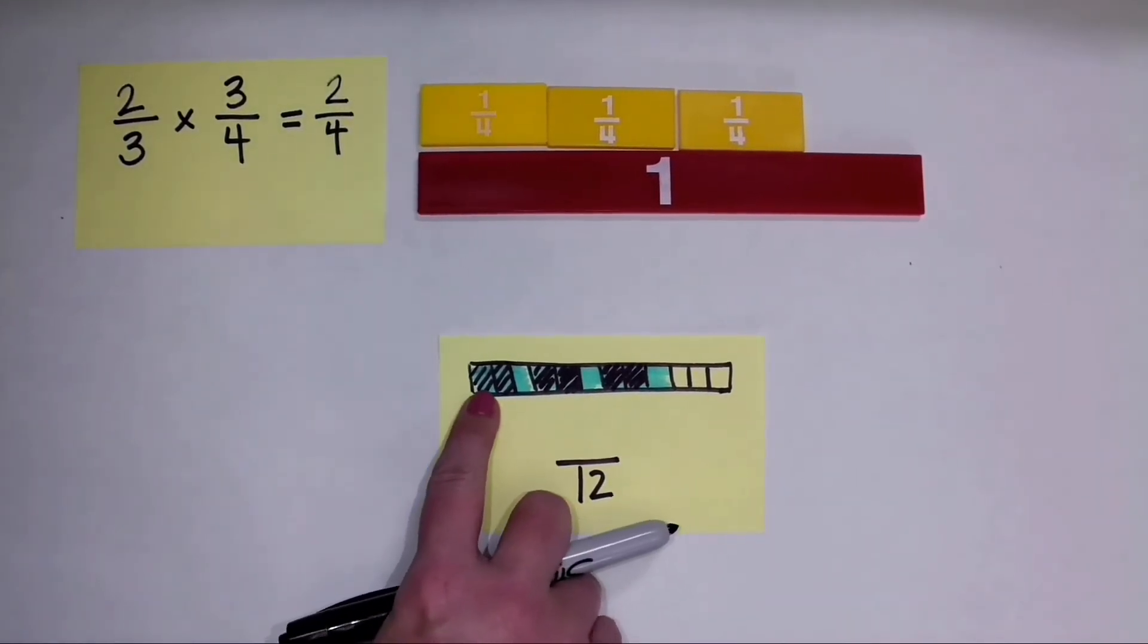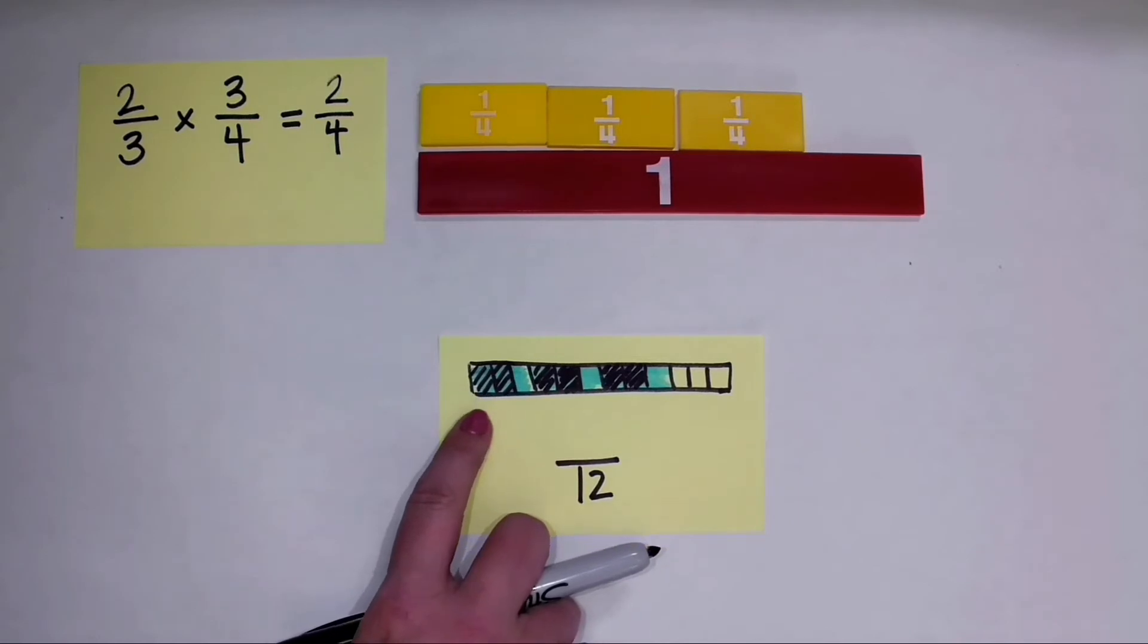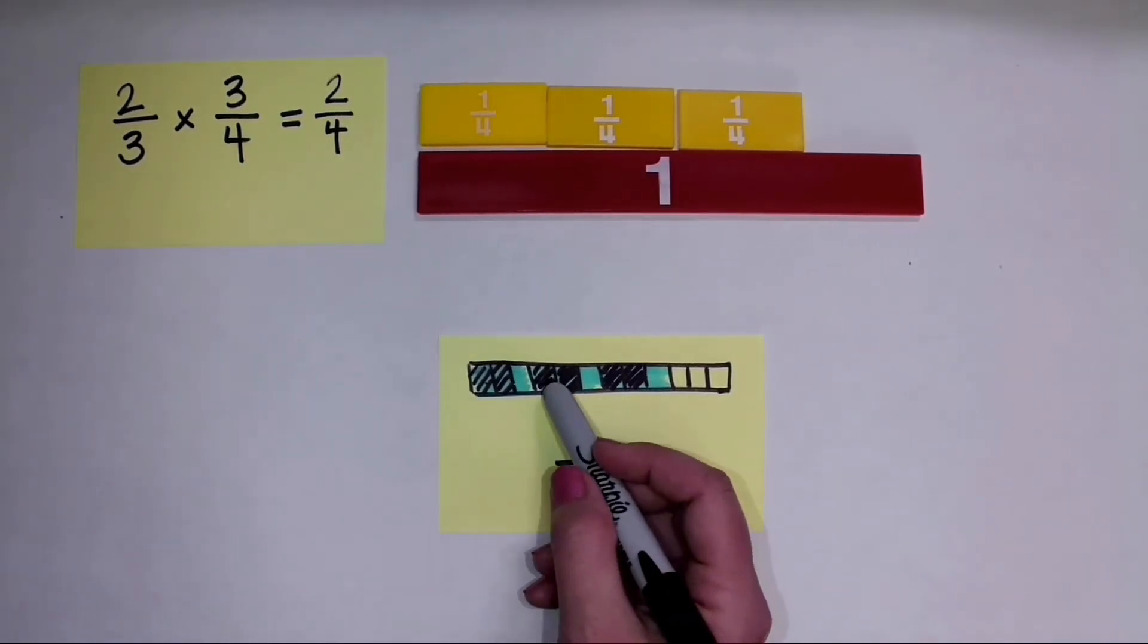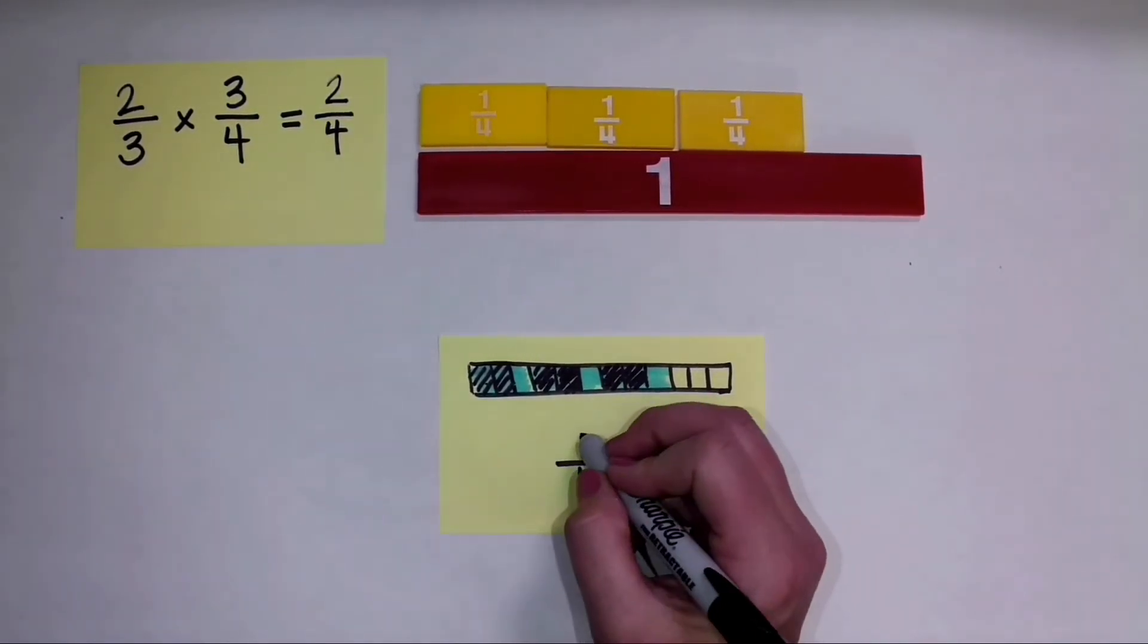And when I identified 2 thirds of each of the 1 fourth pieces, I identified 1, 2, 3, 4, 5, 6 pieces.